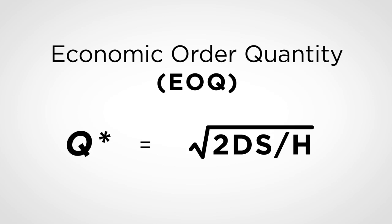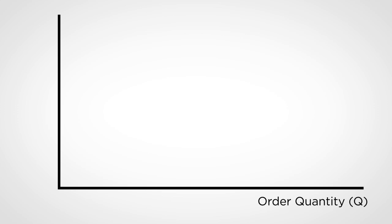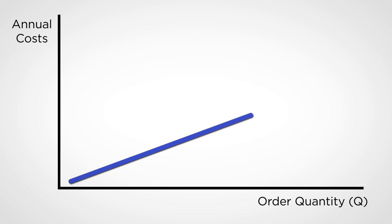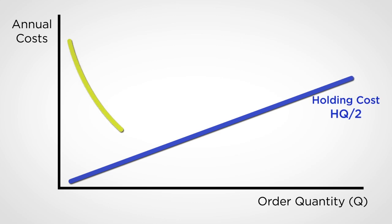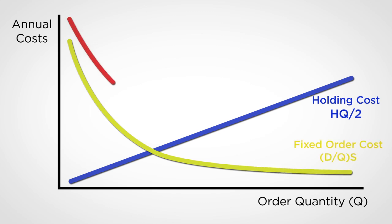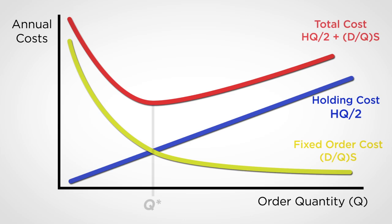To understand this better, it is useful to represent all the costs visually. On the horizontal axis we have the order quantity Q, and on the vertical axis we have the cost in dollars. As the order quantity increases, the average level of inventory increases linearly as H times Q over 2, and hence the holding cost increases linearly. On the other hand, the fixed order cost decreases as we have to place fewer orders. The total cost is the sum of the two, and we see that there is an optimal order quantity that minimizes the total cost.